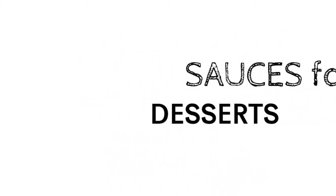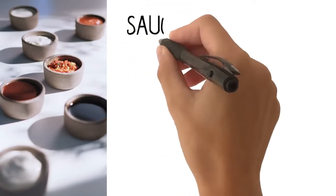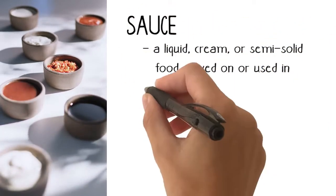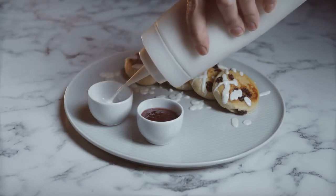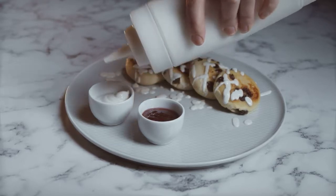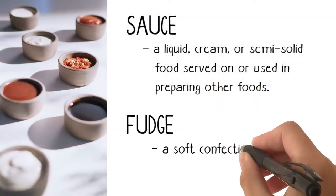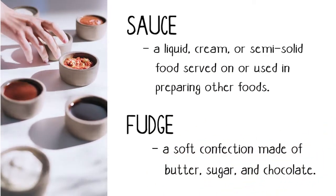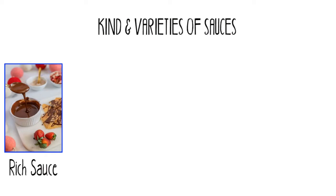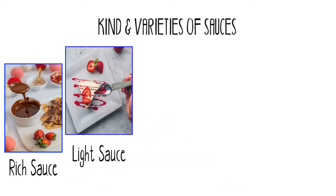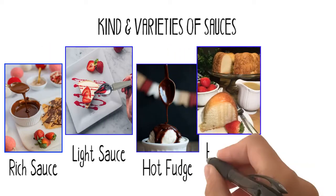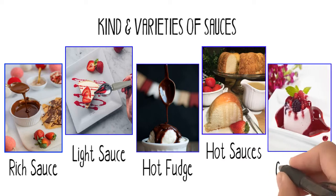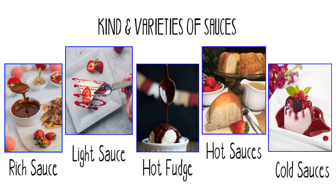Sauces for Desserts. Sauce is a liquid, cream, or semi-solid food served on or used in preparing other foods. In desserts, it is a flavored liquid blend of different ingredients that adds flavor and enhances the appearance of the food. Fudge is a soft confection made of butter, sugar, and chocolate. Rich sauce is well-suited to a simple dessert; light sauce is suited to a rich dessert. Hot fudge is a delightful contrast to a cold cornstarch pudding or vanilla ice cream. Hot sauces are made just before they are to be used. Cold sauces are cooked ahead of time, then cooled, covered, and put in the refrigerator to chill.